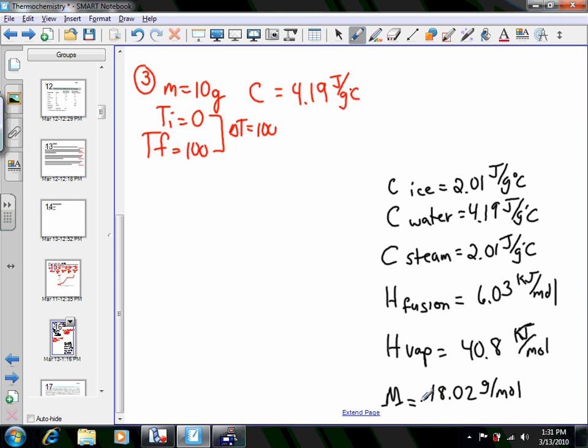So taking a look at this, we would set up Q is MC delta T. We have 10 grams, 4.19 joules per gram degree Celsius, and a temperature change of 100. Well, that is 4,190 joules of energy required for that step.